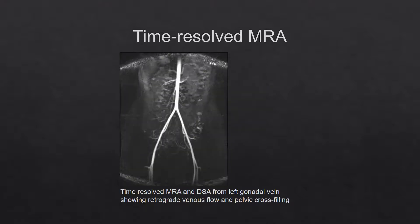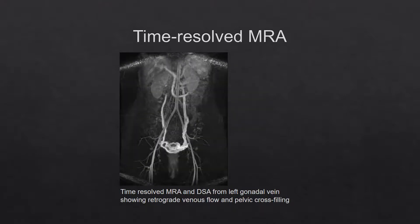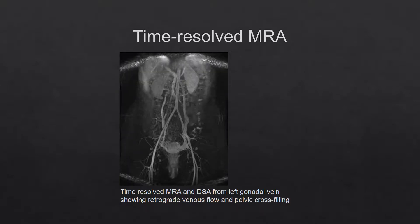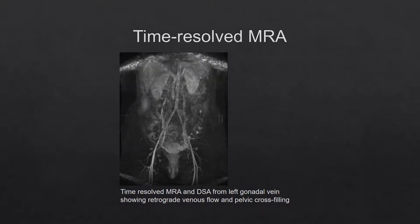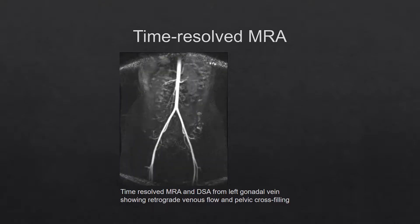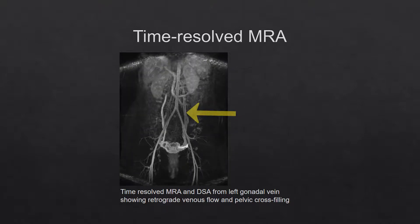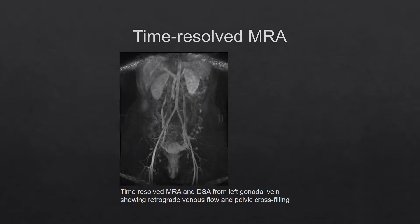Imaging over multiple time points gives information not only of flow rate but also of flow direction. This patient had lower abdominal discomfort which was worse at the end of the day. Time-resolved MRA clearly shows brisk retrograde flow into the gonadal vein, confirming venous incompetence in keeping with pelvic congestion syndrome.